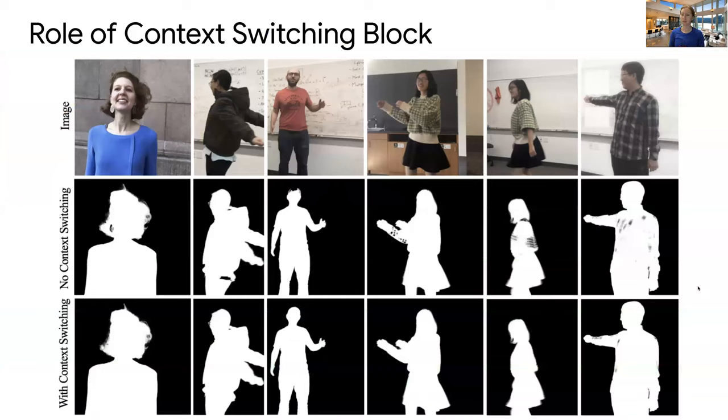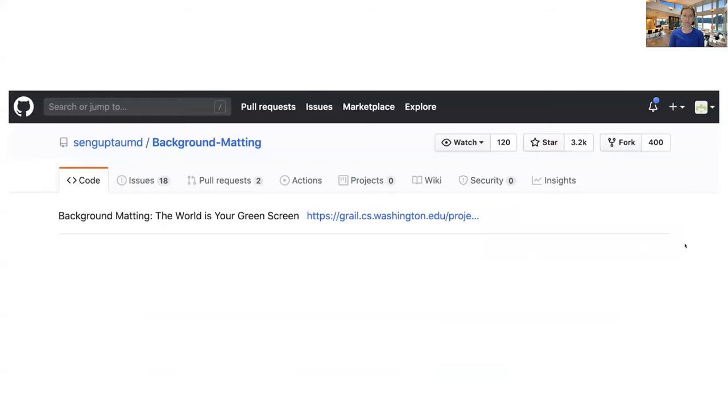The context switching block turns out to be pretty important in our algorithm. Here's an ablation study where we see that without context switching at the middle row here, we see artifacts and missing parts in the alpha mat. The code is online and it's pretty popular. So feel free to check it out online and see more results and try it out. The training and the inference code is online.